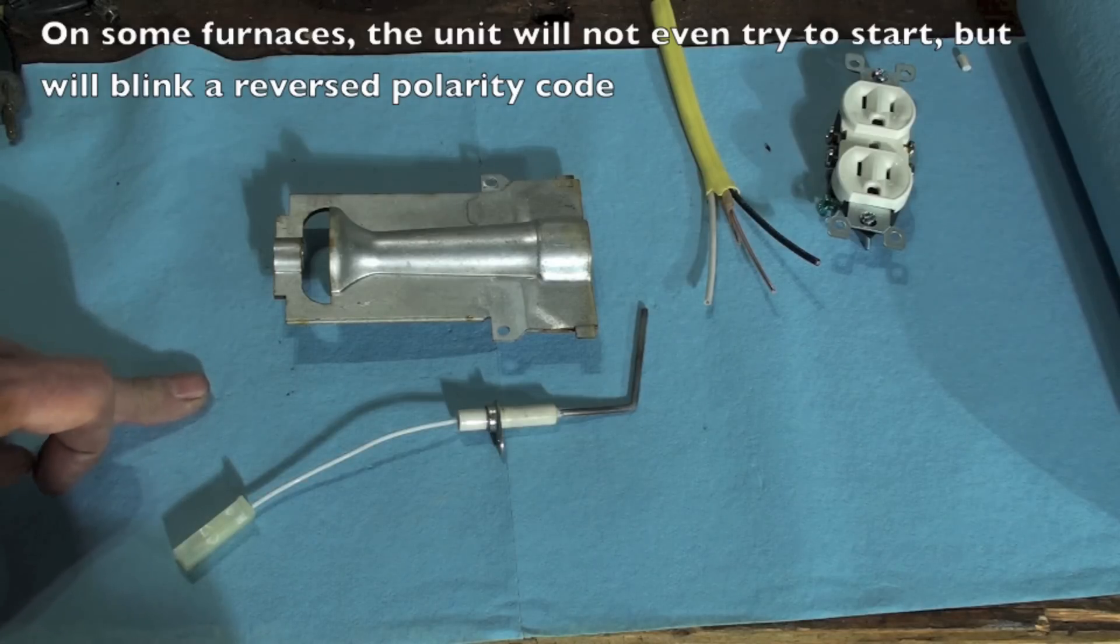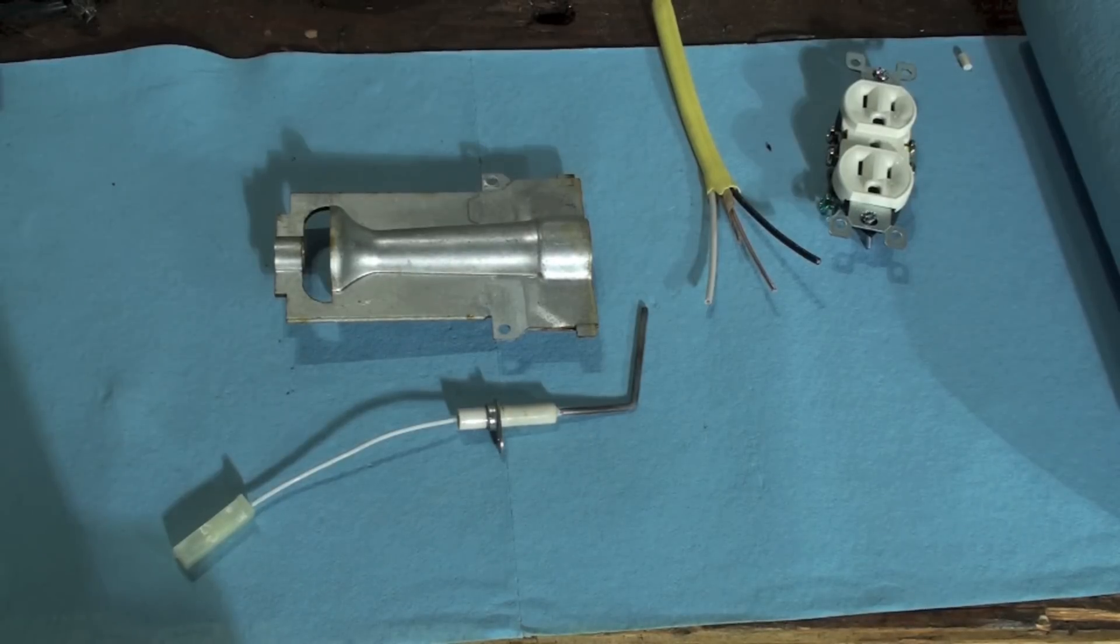Four to seven seconds trial for ignition. They'll just shut off. Your polarity is reversed. If you reverse your two wires coming into the furnace, it will fix it.